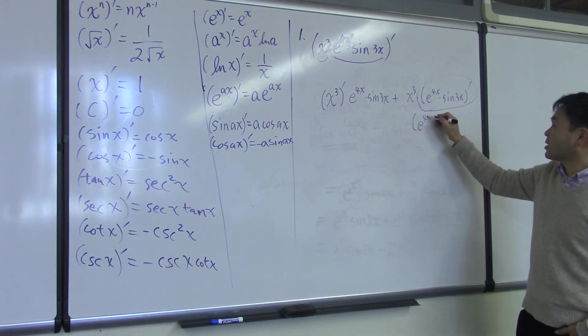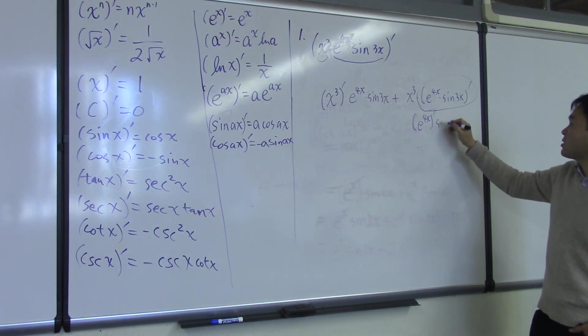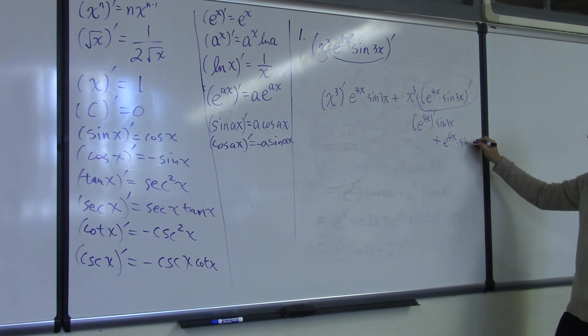And this thing becomes e to the 4x prime sine 3x plus e to the 4x times sine 3x prime.